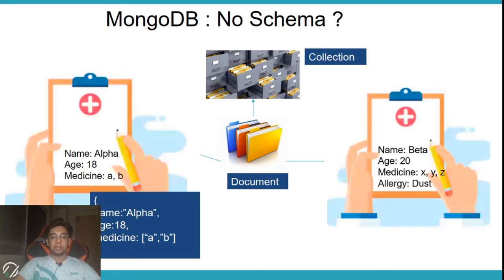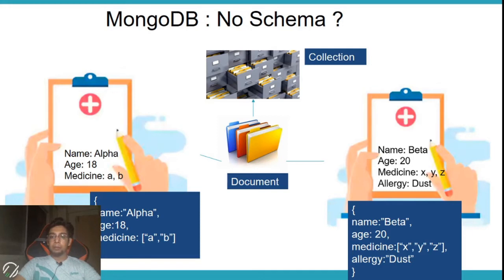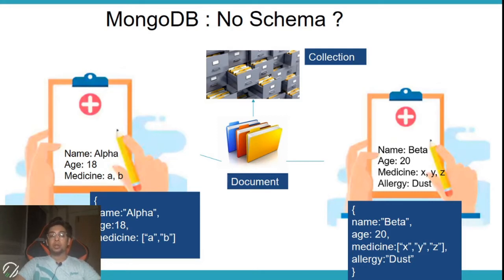The values will always change, but the keys remain the same. In JSON format, you store the data. For Beta, you store all the same details in a JSON format, but here one more key has been added — the 'allergy' key — because he is allergic to something. So both Alpha and Beta generate a JSON document, but they have different numbers of fields. Alpha has name, age, and medicine; Beta has name, age, medicine, and allergy. In MongoDB, documents are formed based on the data.